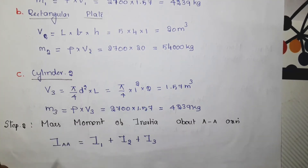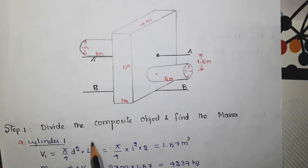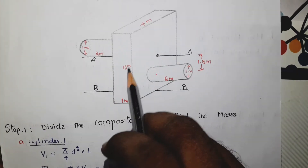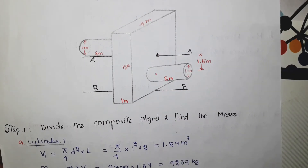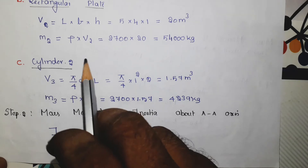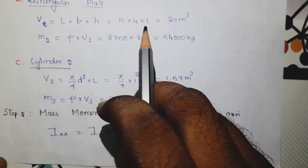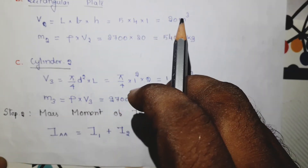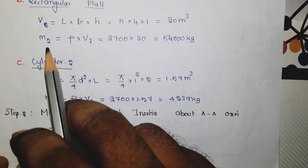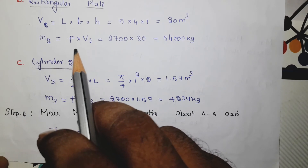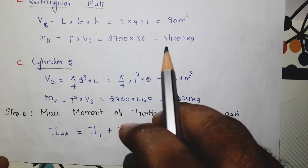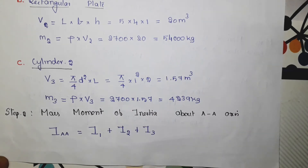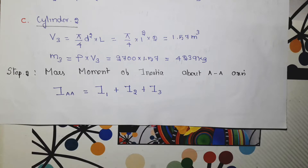The second object is the rectangular plate. The dimensions are: length equal to 5 meters, width equal to 4 meters, thickness equal to 1 meter. Volume equals L × b × h, substituting gives 20 meter cube. Mass m2 equals ρ into volume, giving a final answer of 54,000 kg.